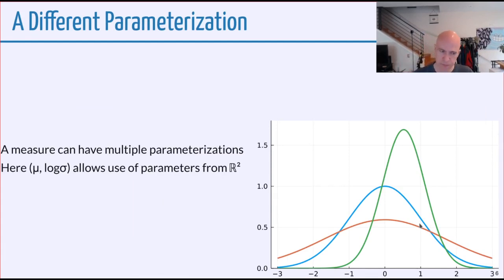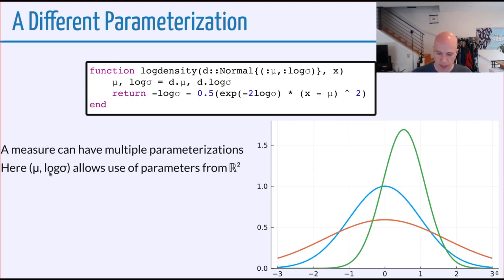Let's look at some different parameterizations now. In measure theory, a measure can have several different parameterizations. If we want to be able to try a few different normal distributions and a few different normal measures, it's especially convenient if we can parameterize this so that the parameters can be over all of R2. This allows us to do this with no extra transformations outside of measure theory. If we use a mu and a log sigma, this allows both of these to be any real number. Here's the definition of the log density. The point here is just that we have log density defined for a given parameterization.